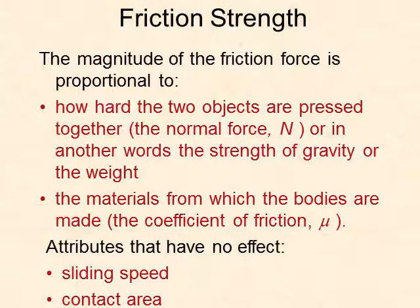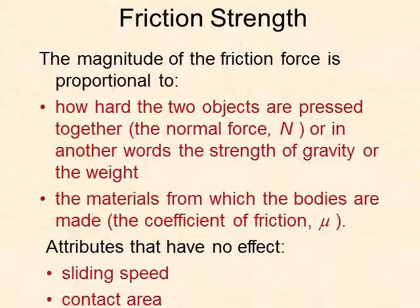So again, what makes some friction stronger than others? It has to do with how hard the two objects are pressed together by the normal force. The normal force is the force that acts in opposition to gravity — gravity is pulling the object down, and the normal force is pushing it up. So the greater the weight of the object, the greater the normal force will be, and therefore the greater the friction will be.